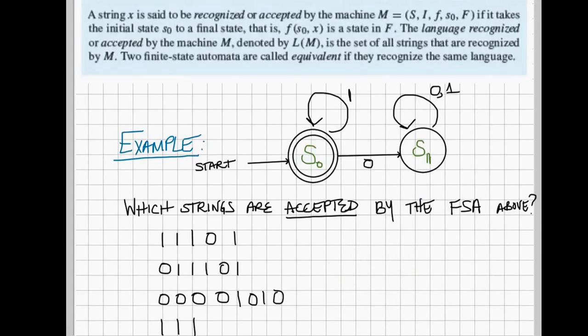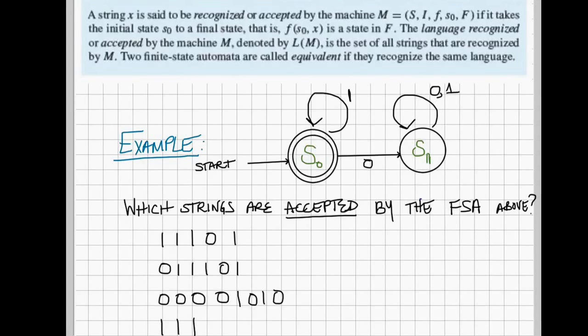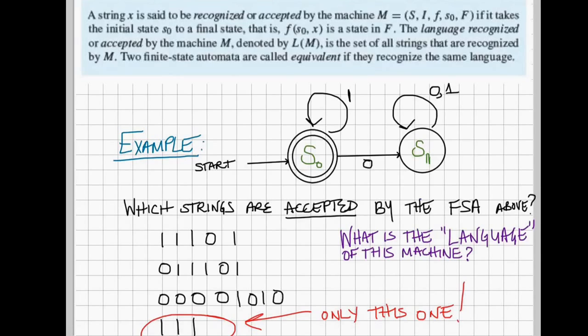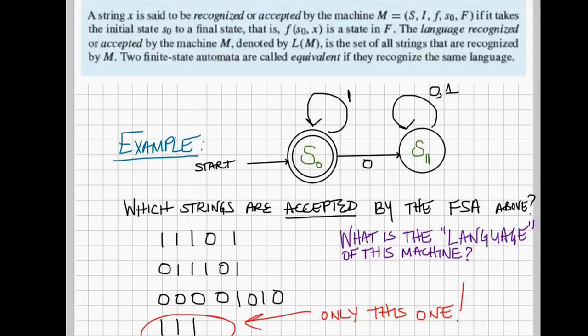Alright, if you've done your work, I hope you've found that there's only one string in this group that is recognized by our finite state automata. And that is the sequence 1, 1, 1.